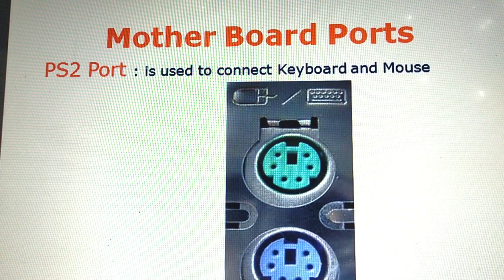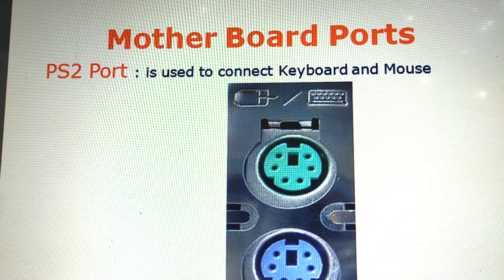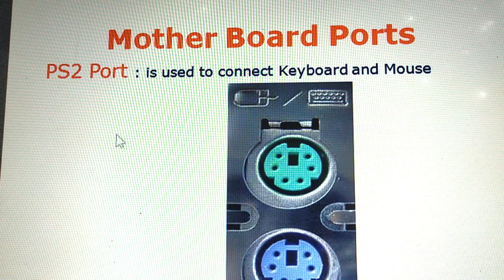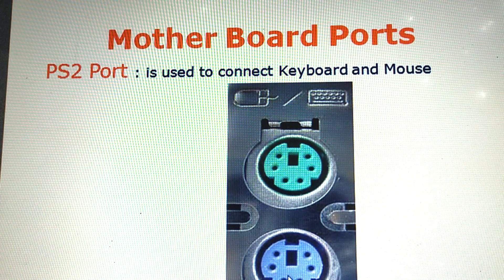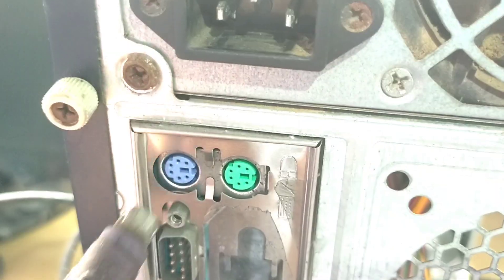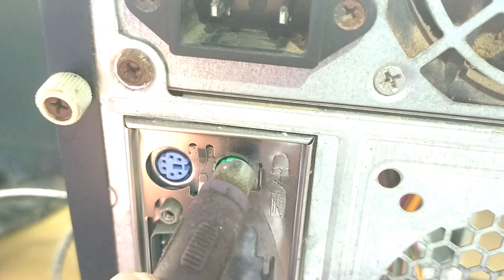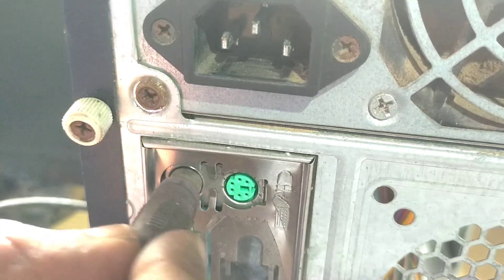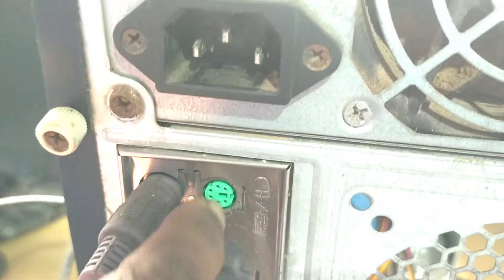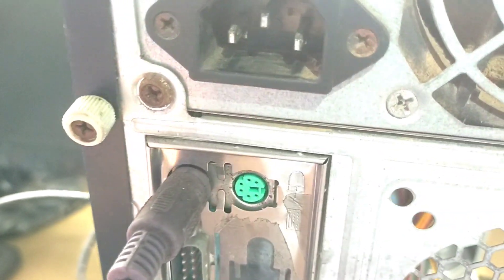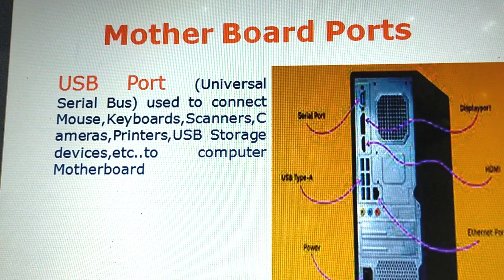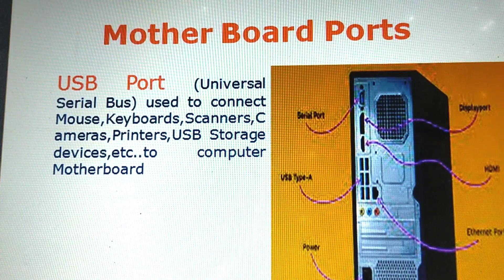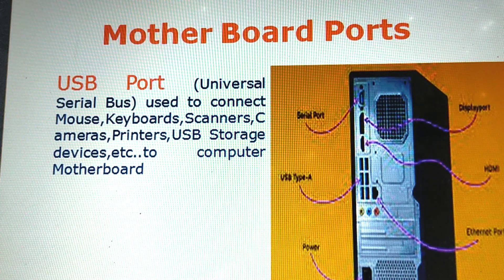Next port — PS/2 port on the motherboard. It is used to connect the keyboard and mouse. The green connector is for the mouse and the purple one is for the keyboard.